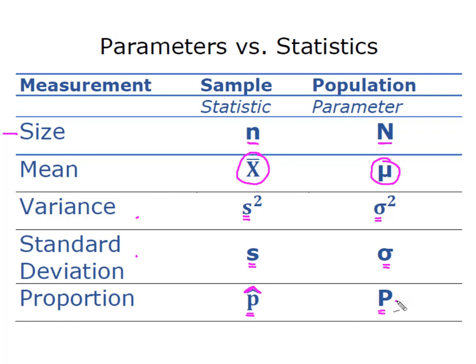On a side note sometimes you'll see the population proportion represented by the Greek letter pi.